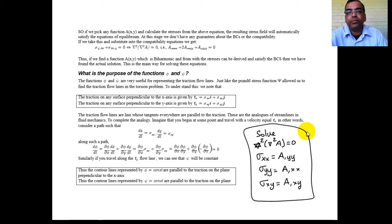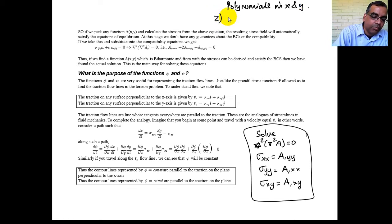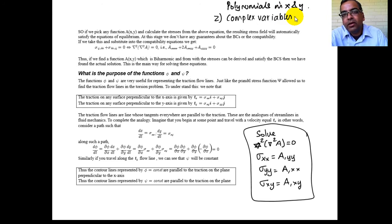The first analytical method is by using polynomials. This is kind of painful because you have to do a lot of calculations, but nevertheless you can do that. The second one is complex variables. Complex variable technique is really fantastic, awesome, absolutely phenomenal.